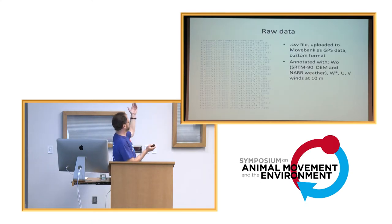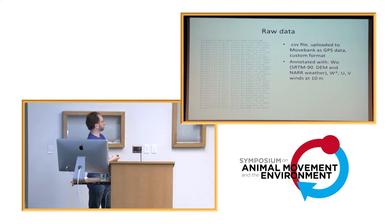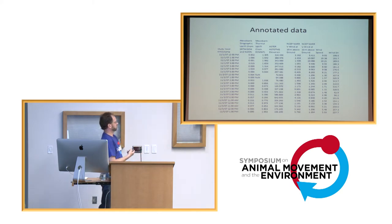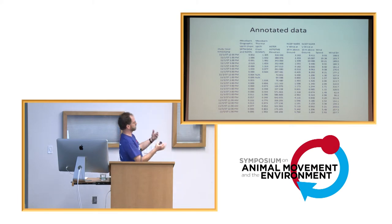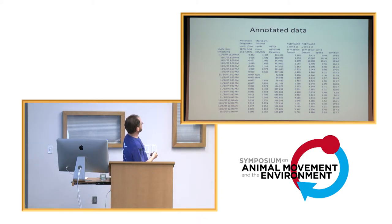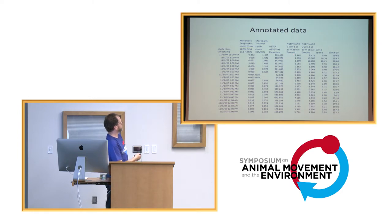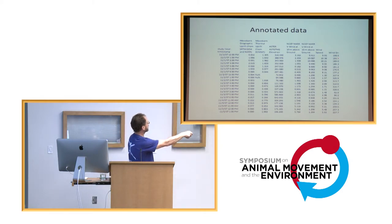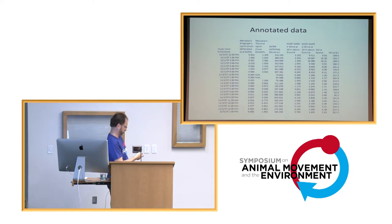The raw data is just a CSV: bird ID, year, date, time stamp, lat/long coordinates. What comes back is a table with new columns: elevation of the ground surface, U and V wind components. I think in wind speed and direction rather than U/V components, so I always do a little calculation. You can see there were southerly winds and then it switched — there may have been a frontal passage — switching over to northwest.